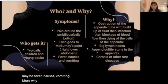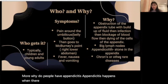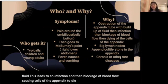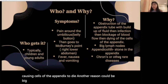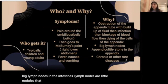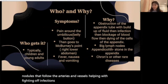Why do people get appendicitis? Appendicitis happens when there is obstruction of the appendix tube with buildup of fluid. This leads to an infection and then blockage of blood flow, causing cells of the appendix to die. Another reason could be enlarged lymph nodes in the intestines. Lymph nodes are little nodules that follow the arteries and vessels, helping fight off infections because they contain white blood cells.